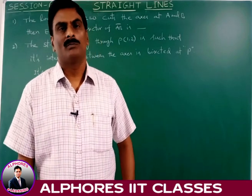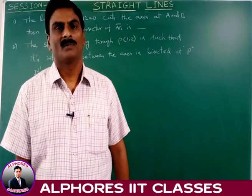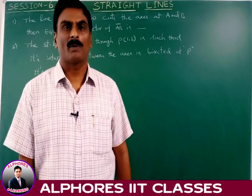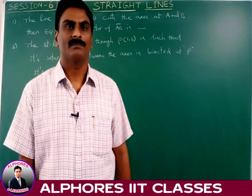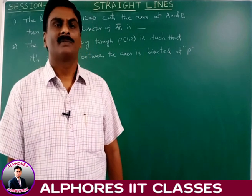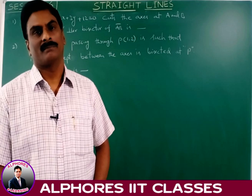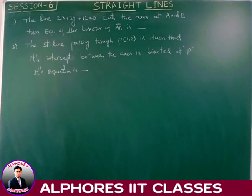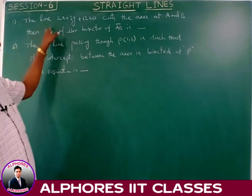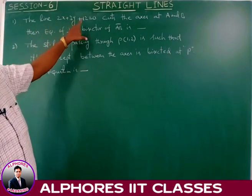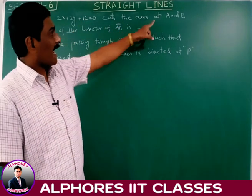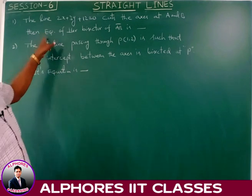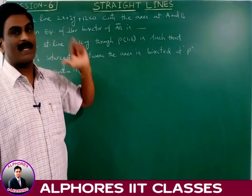Welcome back to all four smash class. Dear students, we have completed some models of the problems in previous class. Now let us continue the remaining models. The line 2x plus 3y plus 12 is equal to 0 cuts the axis at capital A and capital B. Then the equation of perpendicular bisector of AB is to be found.